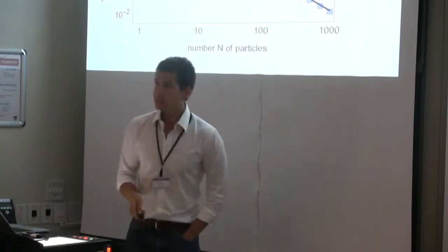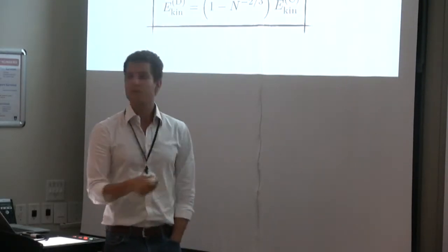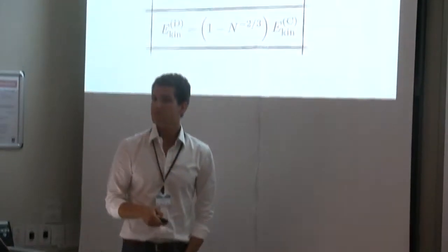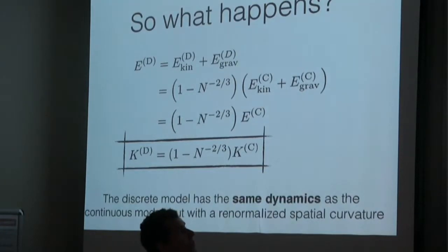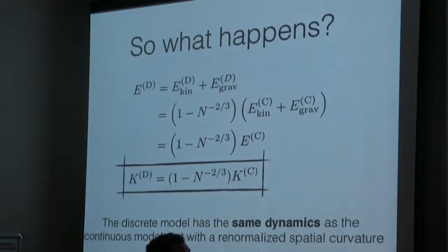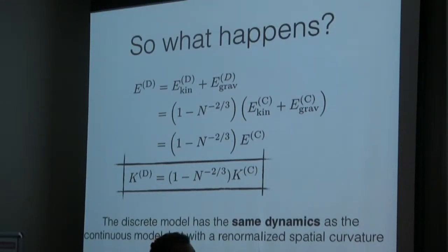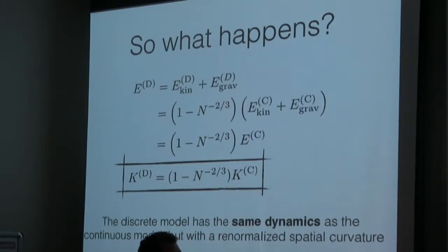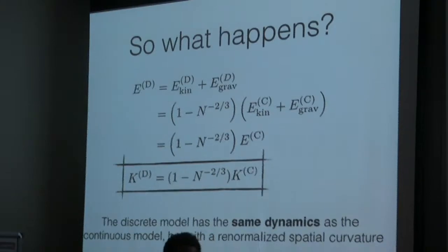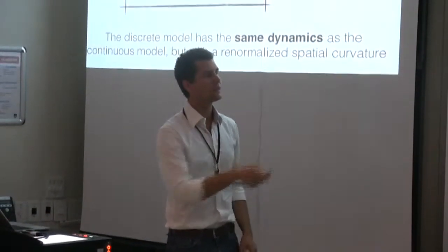Now, what about the kinetic energy? If you do the same calculation, you find the same scaling rule between the discrete and continuous model. Putting it all together: the total energy of the discrete model is just a rescaling of its continuous counterpart by N to the minus 2/3. In terms of cosmology, this can be interpreted as follows: if you have a discrete model, the spatial curvature is slightly different from the one in the continuous model by a factor of (1 − N to the minus 2/3). So you have essentially the same dynamics between a continuous and discrete model, except for this rescaling of the curvature.